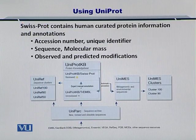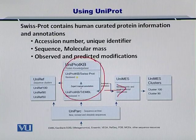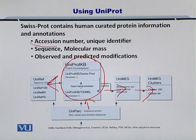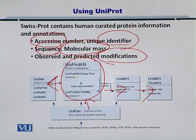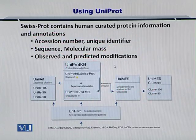The UniProt database relies on other databases to fetch results, and it gives you the accession number, the identifier, the sequence, the molecular mass, and some modifications as well. This is what you will see upon your search in UniProt.